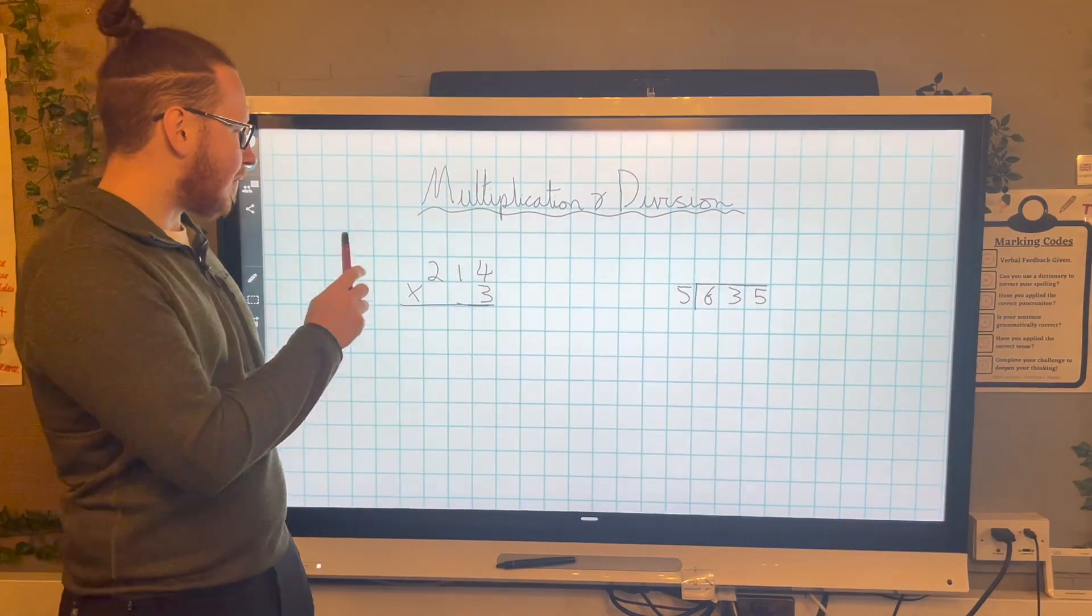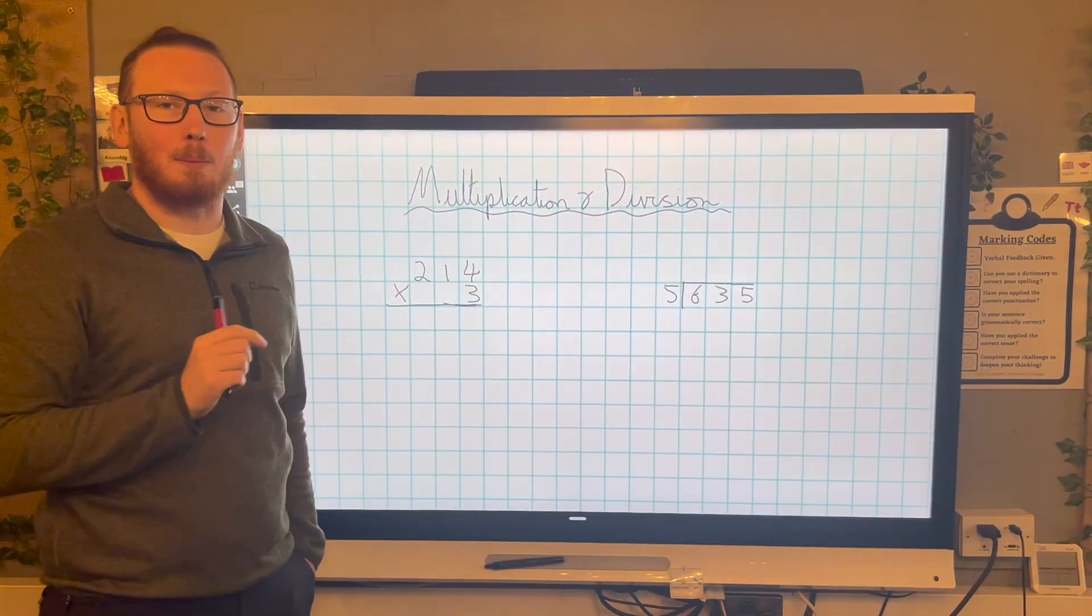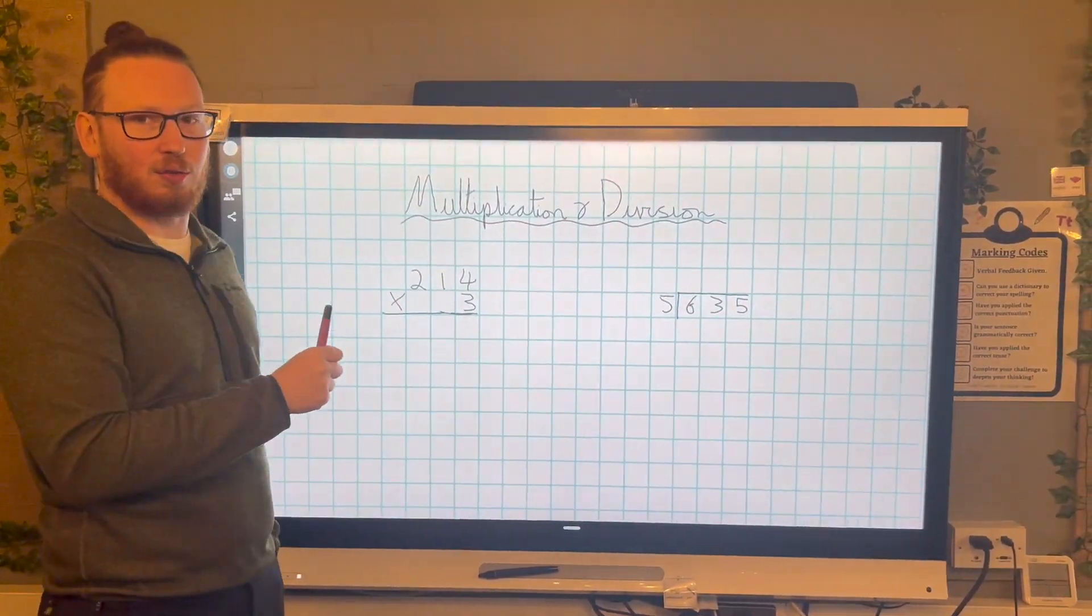So we're going to focus on, first of all, multiplication. So we're going to be looking at a three digit number multiplied by a one digit number. And we're going to use column method for this.